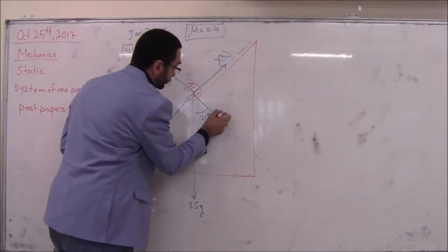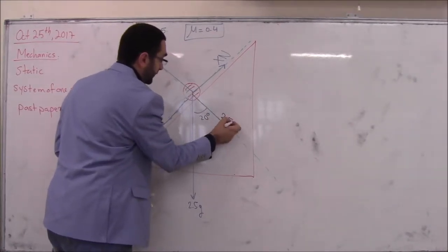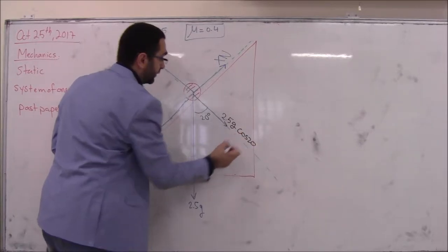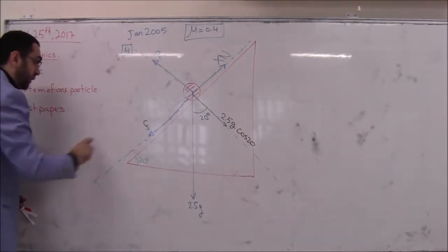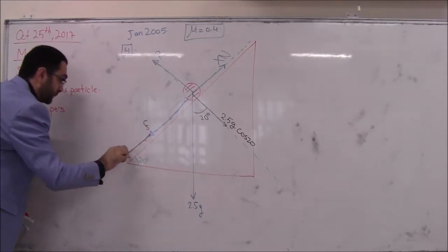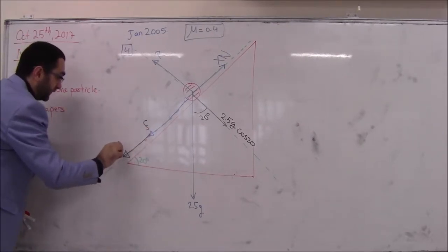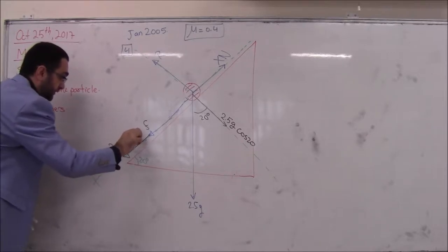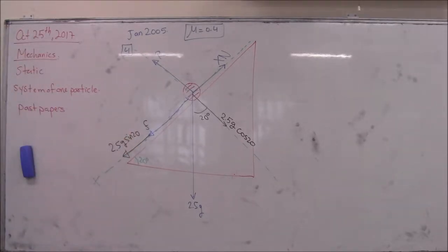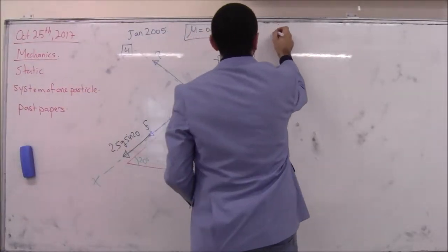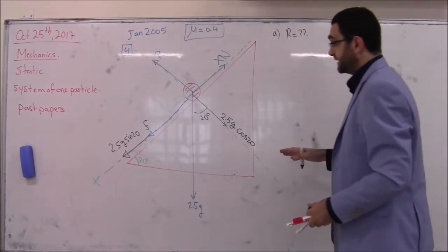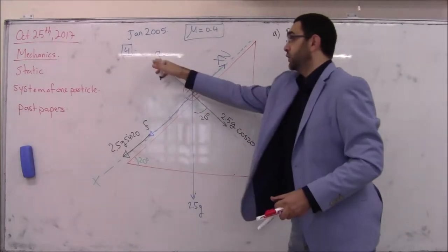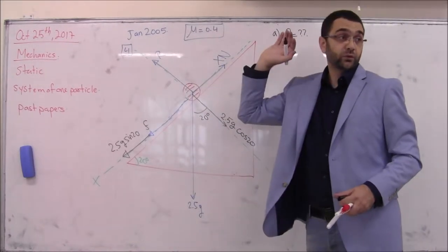Resolving the weight: the component down the plane is 2.5g sine 20, and the component perpendicular to the plane is 2.5g cosine 20. For part A, we find R. Since the particle is in equilibrium, the resultant force along the y-axis equals zero.